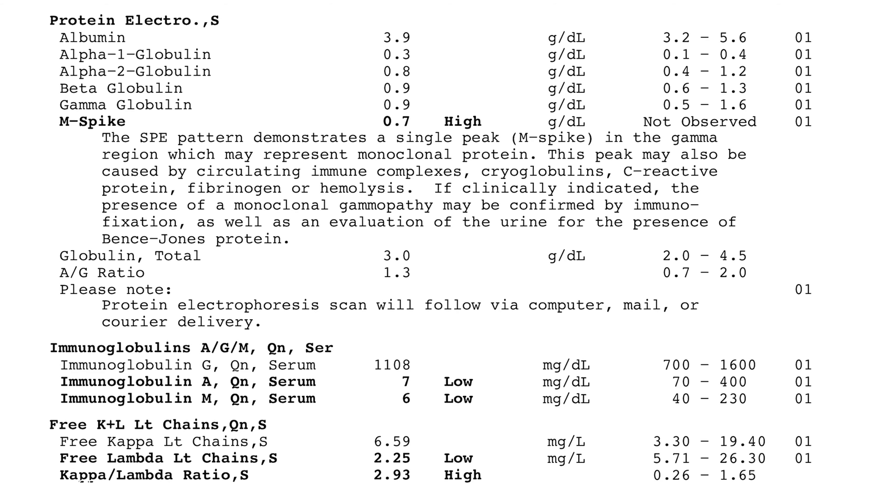Often when a person has myeloma, one of those two types — IgA or IgG — will be very elevated, and the other members in those classes will be depressed. For example, for the most common type of myeloma with an M spike, IgG kappa, which accounts for about 60% of myeloma, those patients might have a very high level of IgG total, while the IgA and IgM levels will be low.